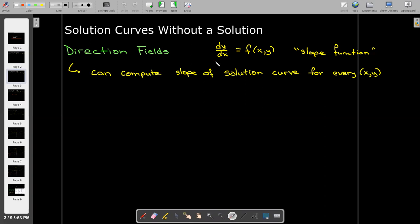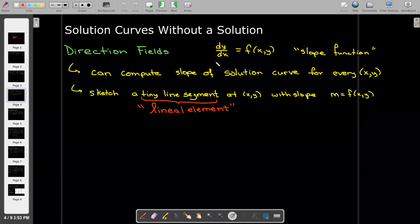So we just pick a bunch of points x comma y, calculate what the slope is, and then we draw a tiny line segment centered at x comma y which has the slope that we just calculated from the function f. That tiny line segment is called a lineal element.